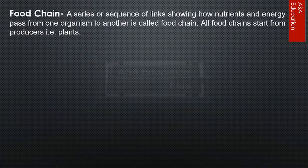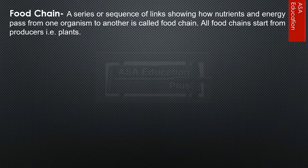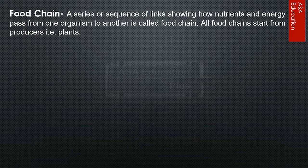A food chain is a series or sequence of links showing how nutrients and energy pass from one organism to another. All food chains start from producers, i.e., plants.